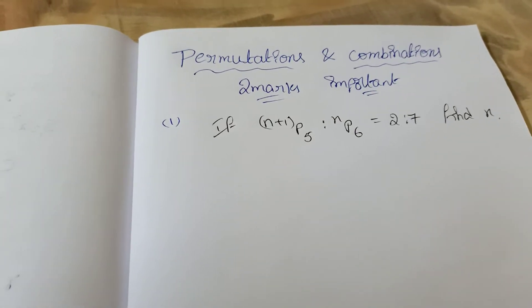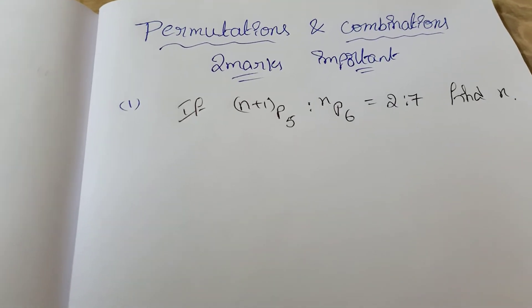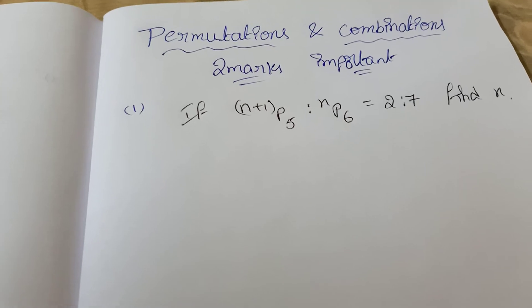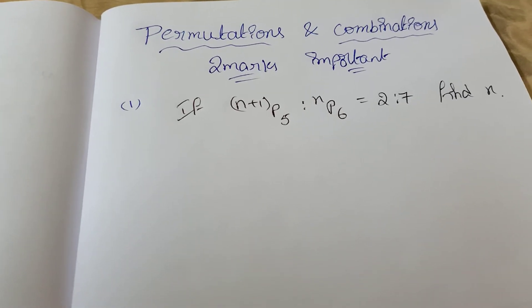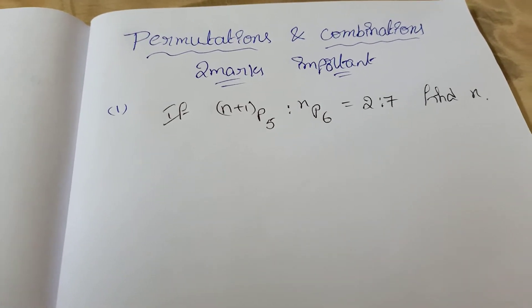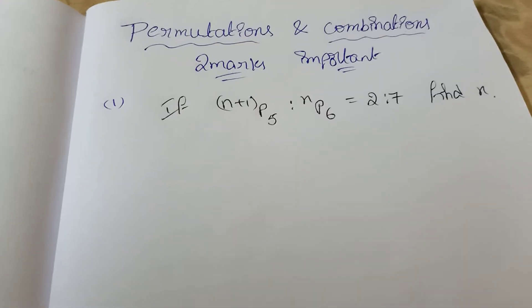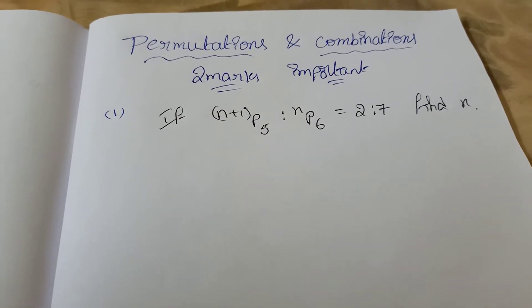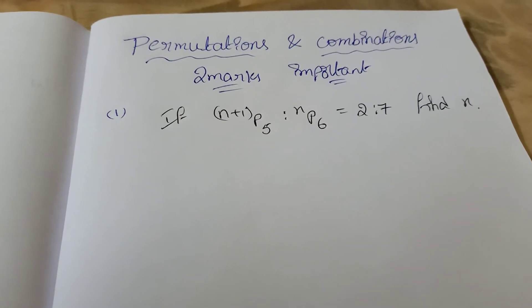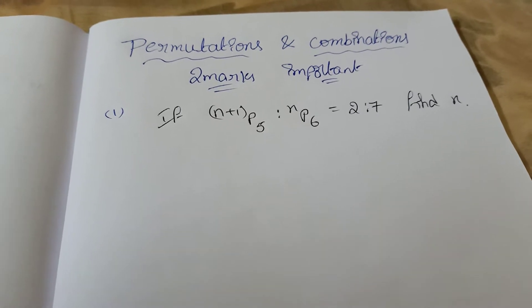Hi students, today I am explaining permutations and combinations two-marks problems. Already I discussed the permutations and combinations introduction. Permutation means arranging — arrange the given items. Combination means selecting — selection of the given items.